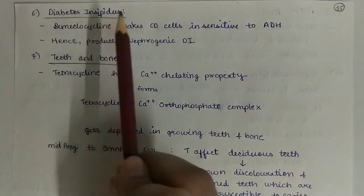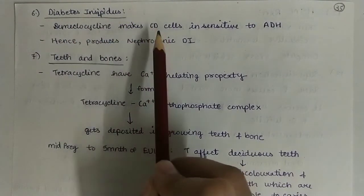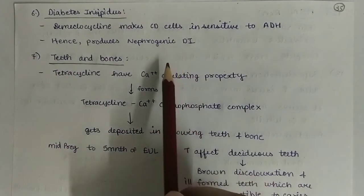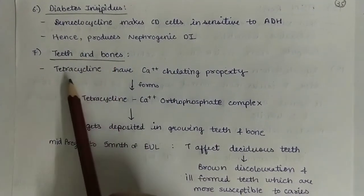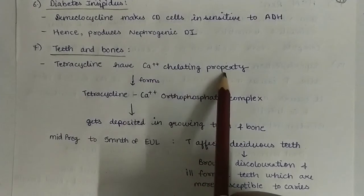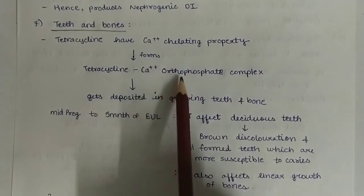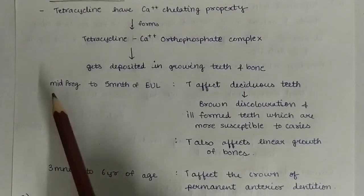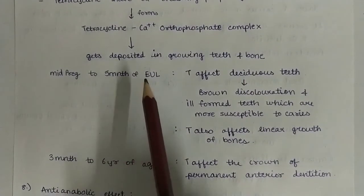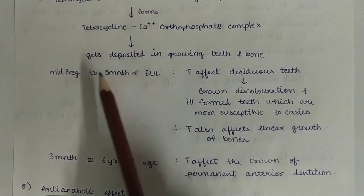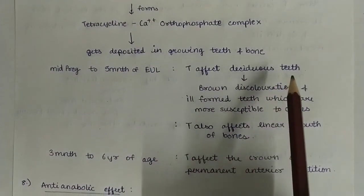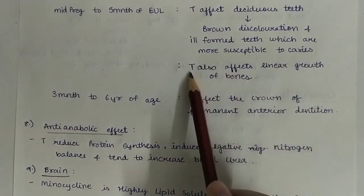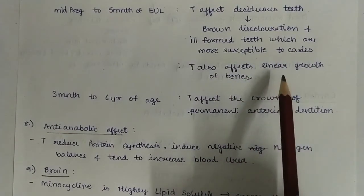Next, diabetes insipidus. Demeclocycline makes the collecting duct cells insensitive to ADH and hence produces nephrogenic diabetes insipidus. Effect on teeth and bones: tetracyclines have calcium chelating property and hence form a tetracycline-calcium orthophosphate complex. It gets deposited in growing teeth and bone. From mild pregnancy to the fifth month of extrauterine life, if tetracyclines are consumed, it will affect the deciduous teeth — brown discoloration and ill-formed teeth more susceptible to caries. Tetracycline also affects the linear growth of bones.